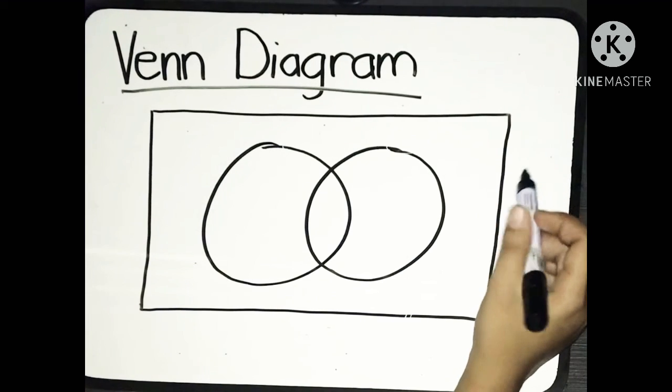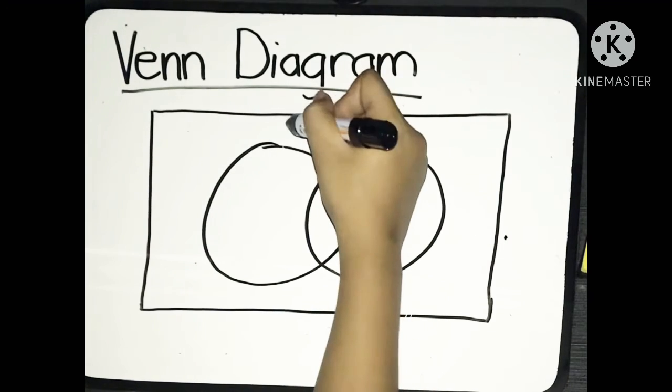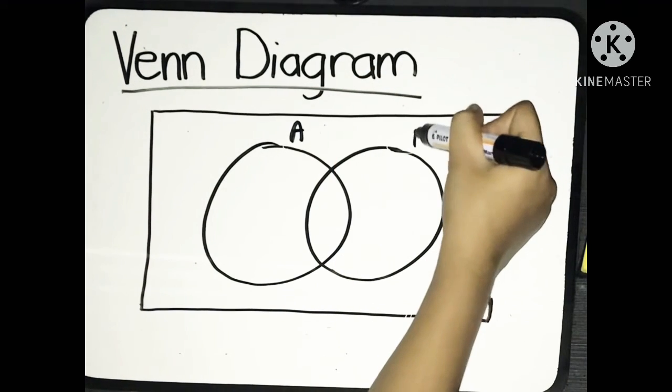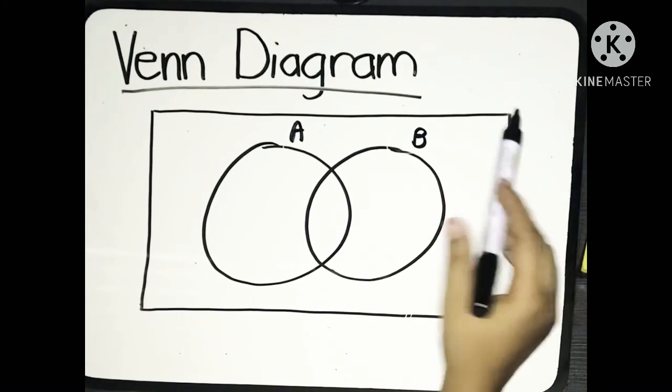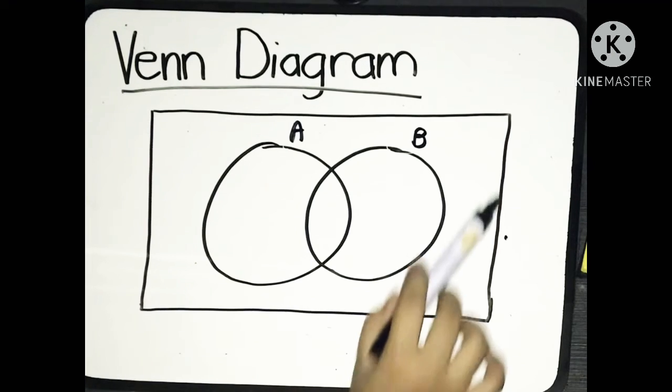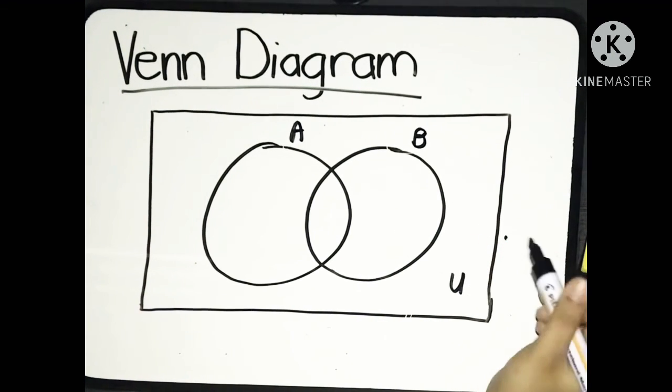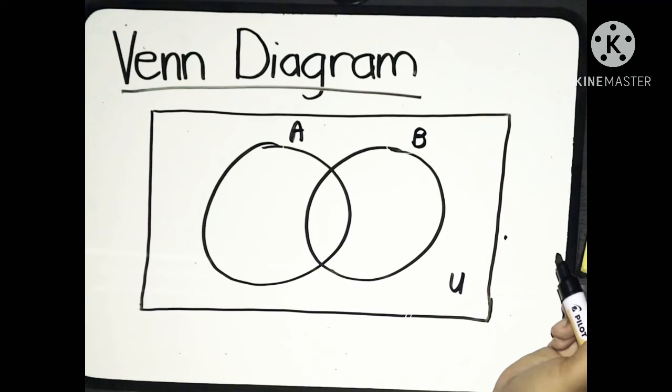Venn Diagram is the principal way of showing sets diagrammatically. Venn Diagram looks like this. As you can see, we have two circles, Circle A and Circle B. And these circles represent two different sets. And as you may notice, we have a rectangle here. And the rectangle represents the universal set or the totality of all the elements.